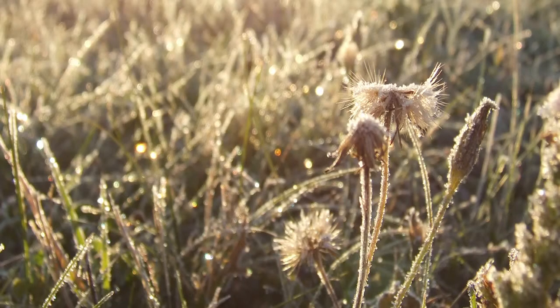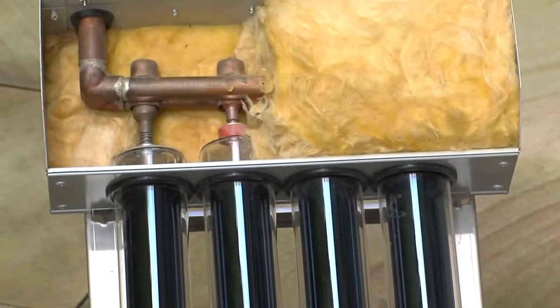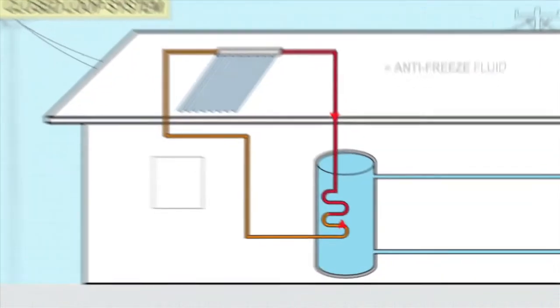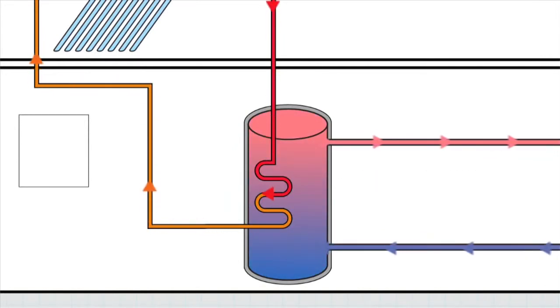In places with minor frosts, evacuated tubes may offer enough inbuilt protection. In climates with regular frosts, indirect or closed loop systems are the most popular and reliable form of frost protection. Instead of water, an antifreeze fluid is heated in the collectors. The antifreeze passes heat onto the water via a heat exchanger. The antifreeze does not come into contact with the household water supply.